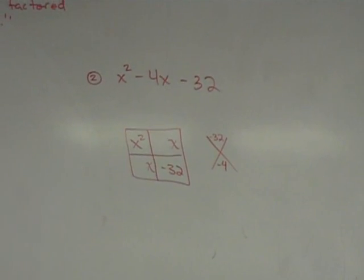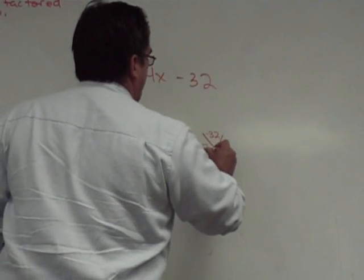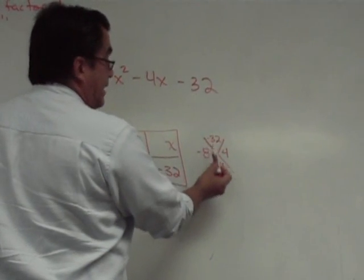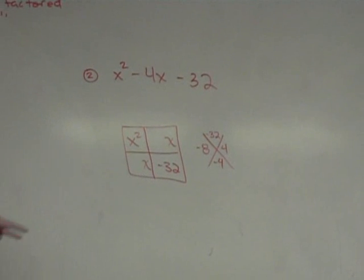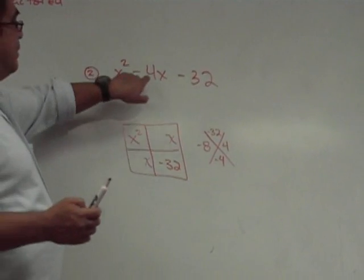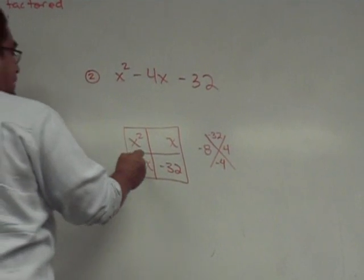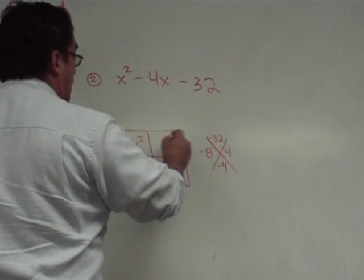Negative 8 and positive 4. If you check, the product will give you negative 32, and the sum will give you negative 4. That's perfect. That means that now we know how we're going to break out that negative 4 in these two boxes. We're going to use negative 8 and we're going to use positive 4.